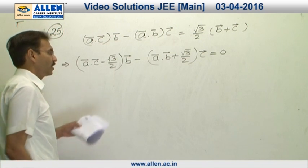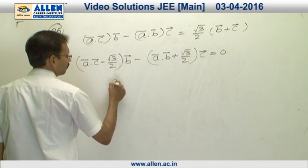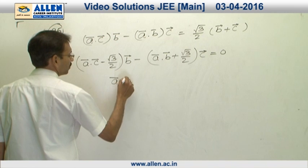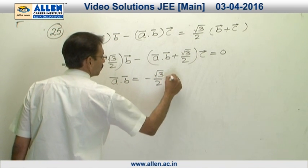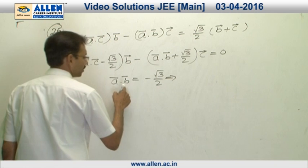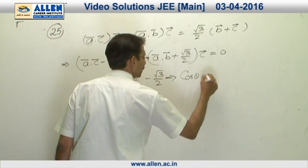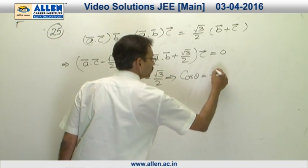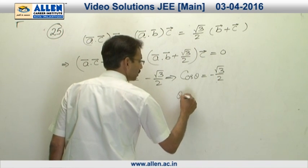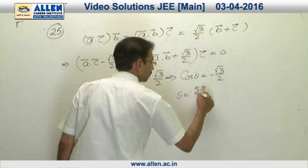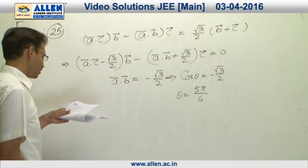We have to calculate the angle between a and b. Setting the coefficient of c equal to zero, we get a·b equals −√3/2. As they are unit vectors, the cosine of the angle between these two vectors is −√3/2, which means θ = 5π/6. So the correct option is 1.